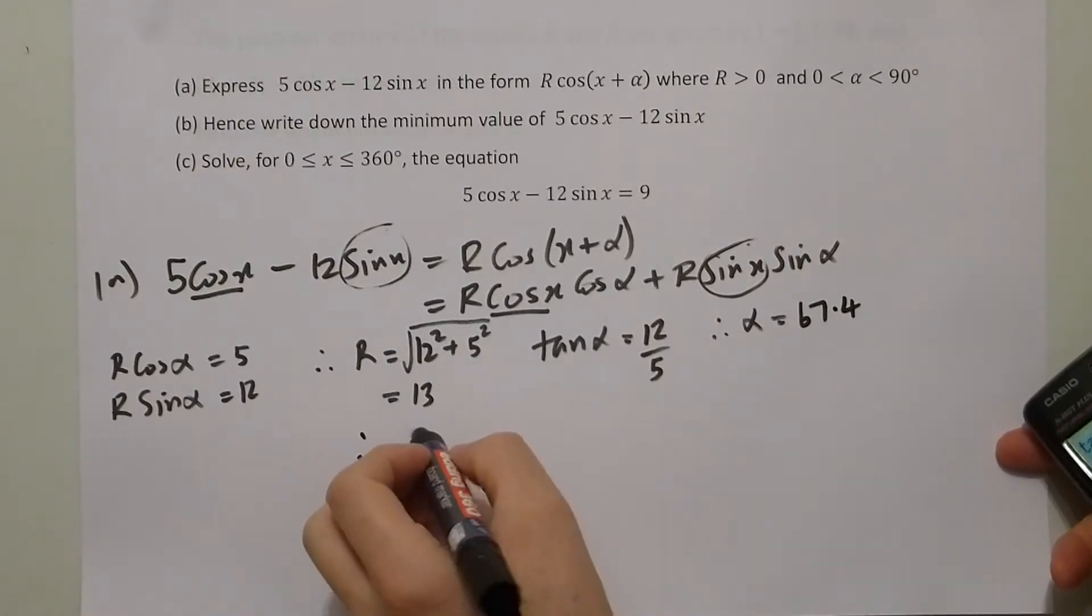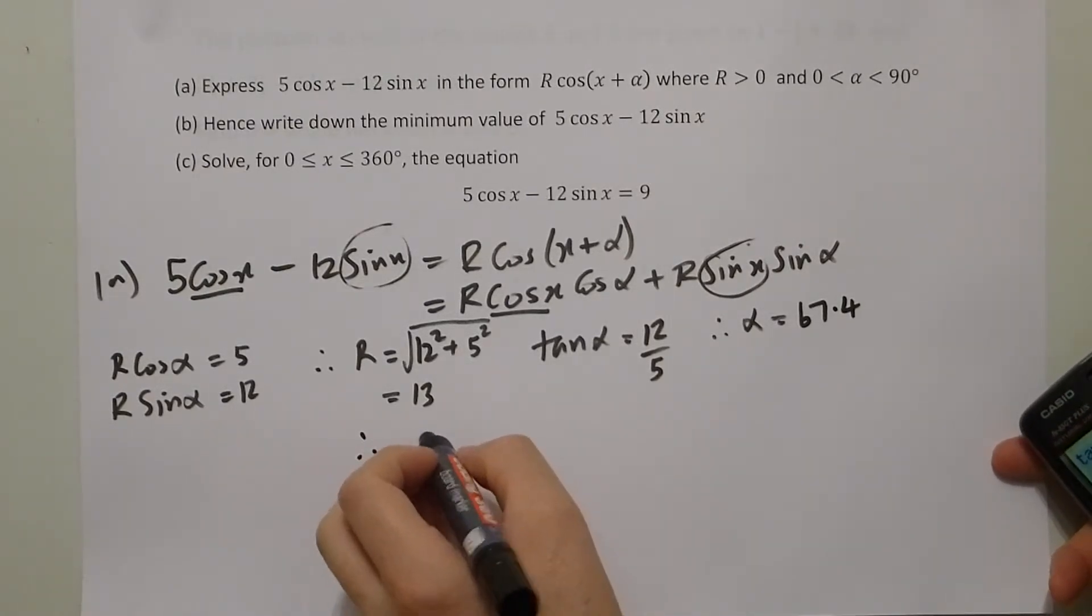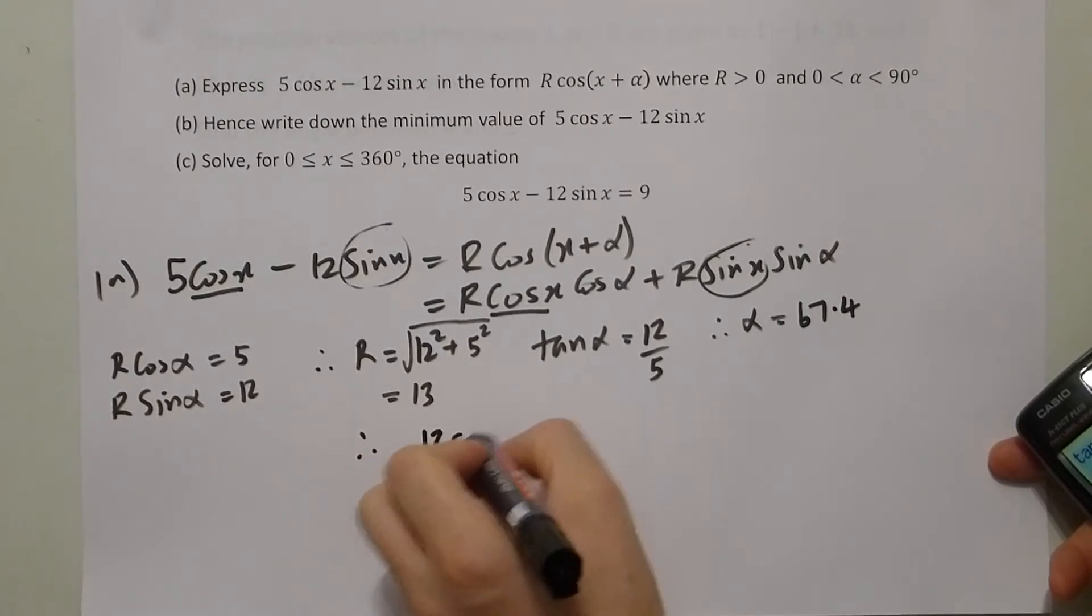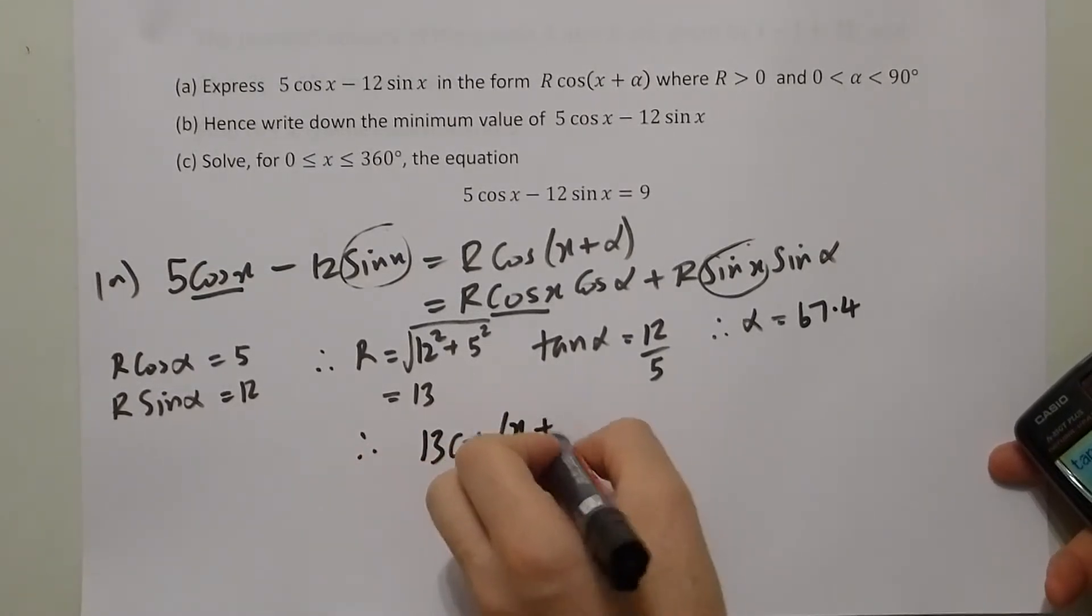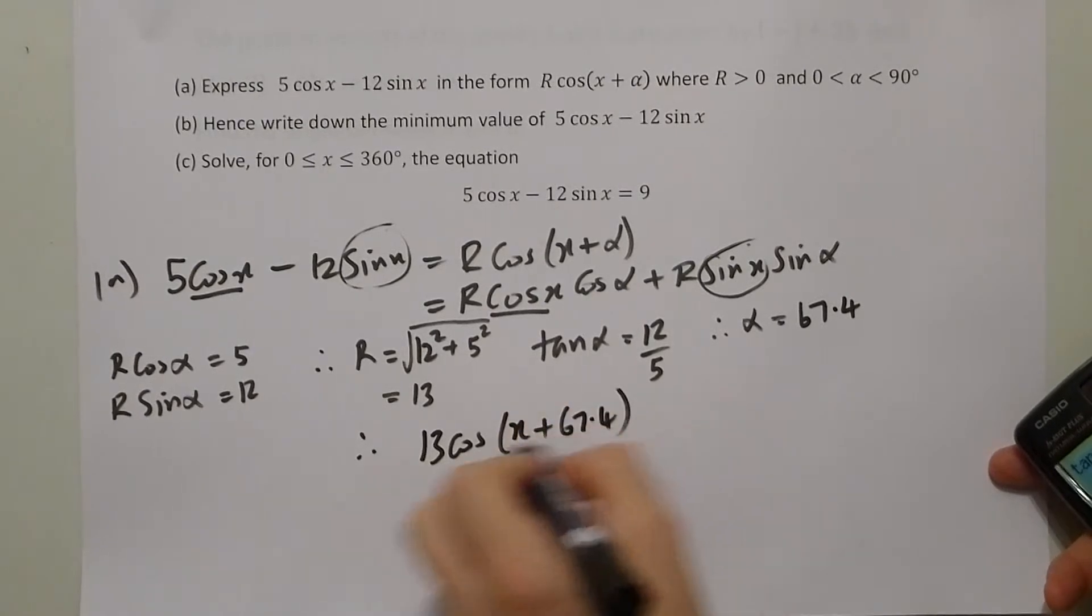So therefore, the R alpha form is 13 cos(x + 67.4).